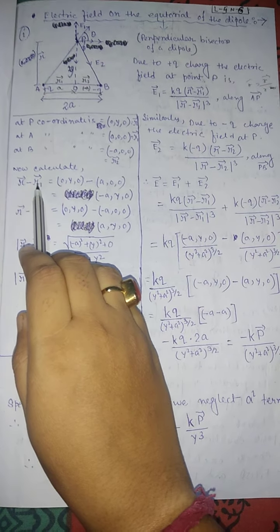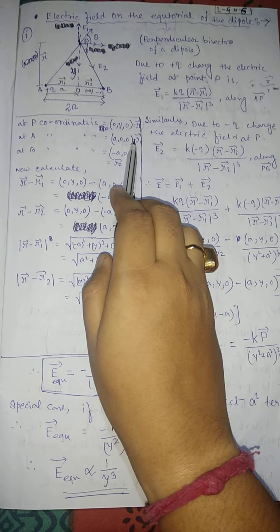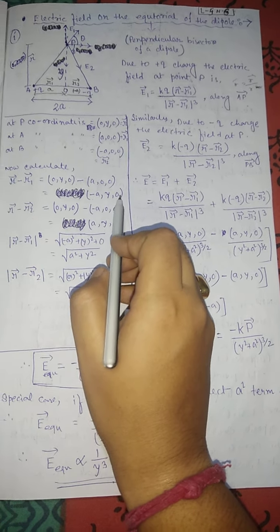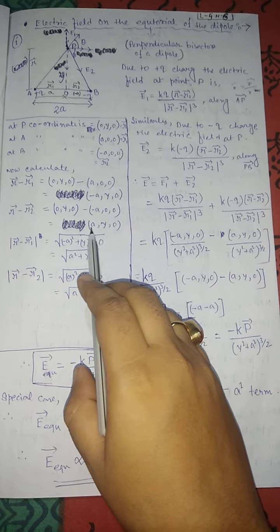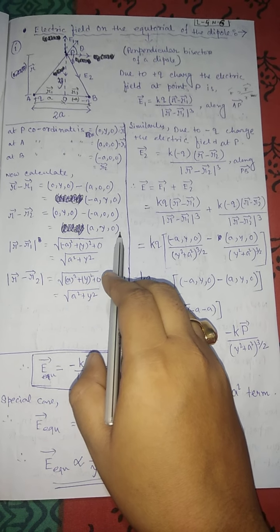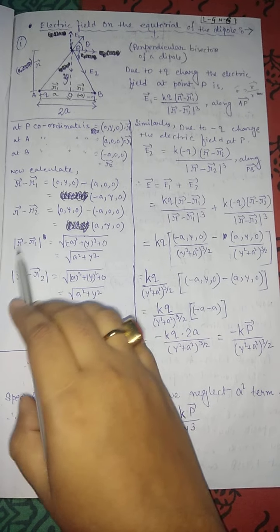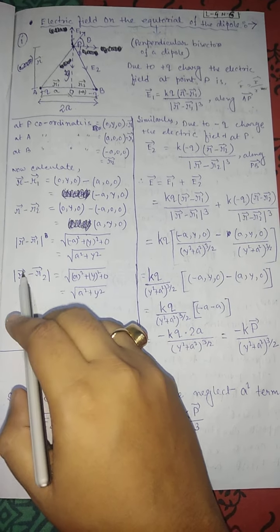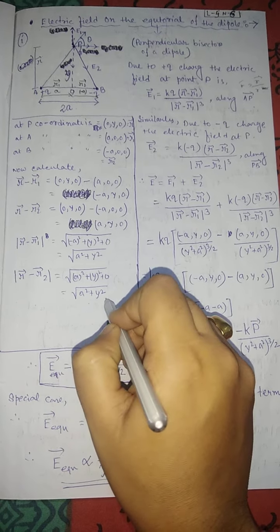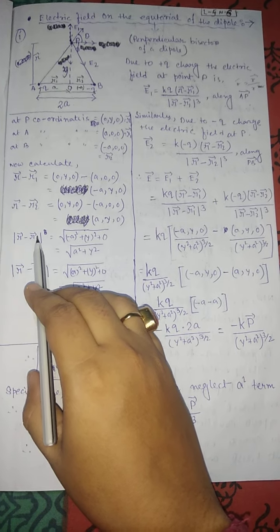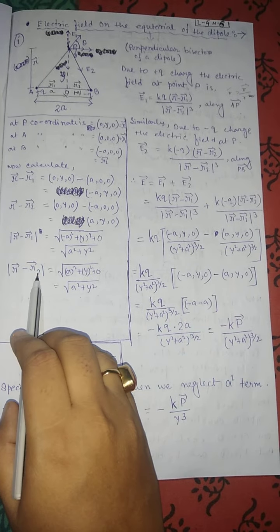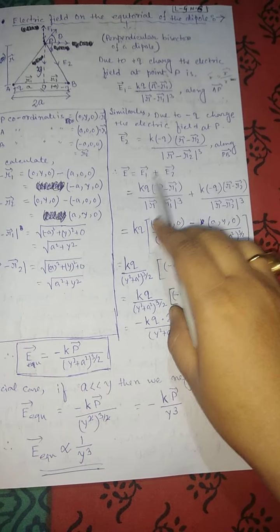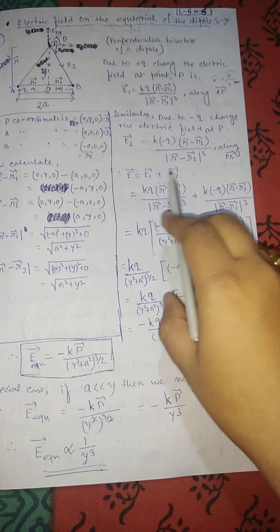r − r1 gives (−a, y, 0) and r − r2 gives (a, y, 0). The magnitude of both is √(a² + y²). So |r − r1| and |r − r2| are equal in magnitude.